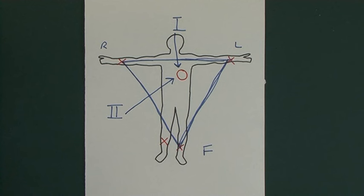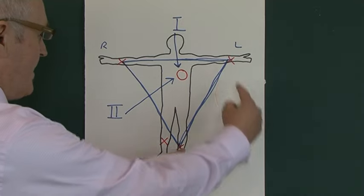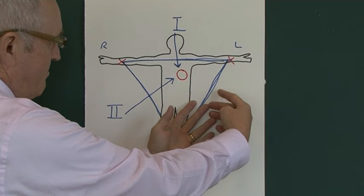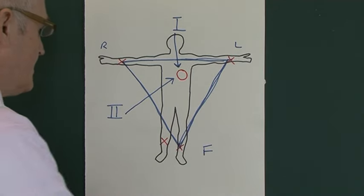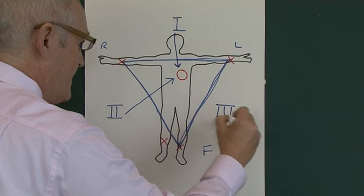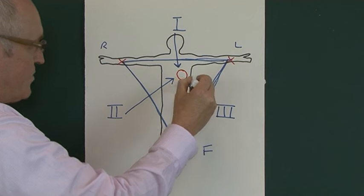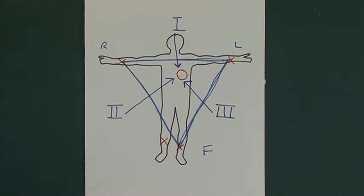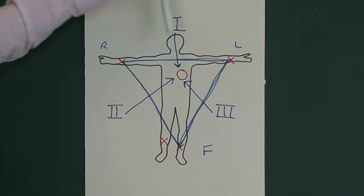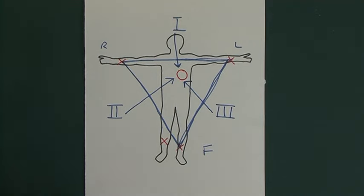Lead three is the third dipolar lead. Again, information is taken from two electrodes and cleverly electrically combined in the machine. So lead three is essentially looking at the heart from yet another direction, giving us a third view. So leads one, two, and three are looking at the heart from different directions using bipolar electrical information.